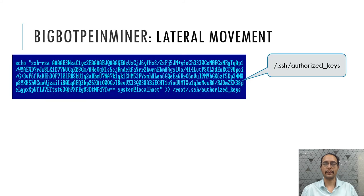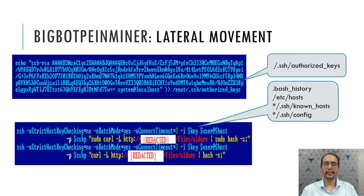It uses one more technique for lateral movement: SSH hijacking. It modifies the authorized_keys file and adds a key into it, then executes an SSH command to deploy BigBotPen Miner into the target container. The information needed as parameters for the SSH command is obtained by scanning bash history files, host files, known_hosts files, and SSH config files.